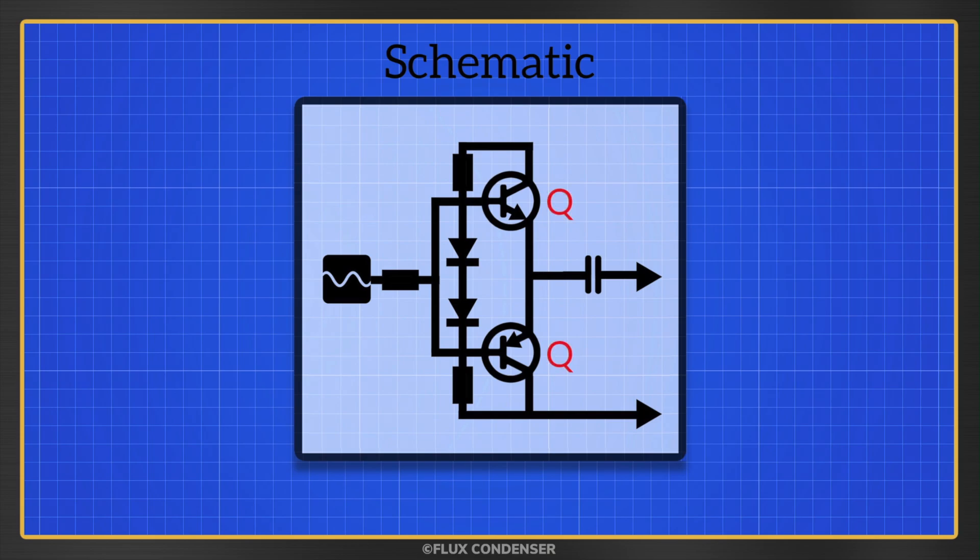If you guessed Q, you're correct. On schematics, resistors are represented with an R, diodes with a D, capacitors with a C, and so on.